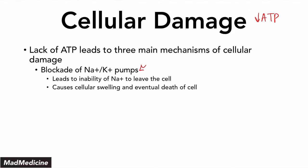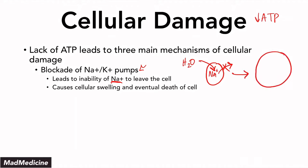Blocking the sodium-potassium pumps means you are not going to be able to remove sodium from the cell. So let's say this is your cell — you have sodium inside, and it cannot go out because you've blocked the pump. Remember, water follows sodium. So if you have water in the interstitial space between the cells, that water is going to see the sodium and come in. Eventually that cell is going to start to swell and it will burst. When you block the sodium-potassium pumps that are ATP-dependent, you see the cell swell and then burst because of increased sodium within the cell.